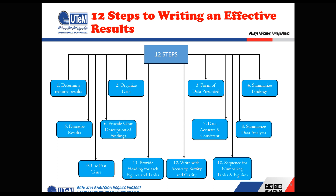The tenth step is the sequence of numbering of tables and figures. You have to decide which figures and tables are important and number them according to sequence. The eleventh step is to give a proper caption to each table and figure. The twelfth step is to write with accuracy, brevity, and clarity. The writing should be very clear and accurate so the reader can directly get the idea of what you have shown in the results section — which will be helpful for examiners, supervisors, and other readers.